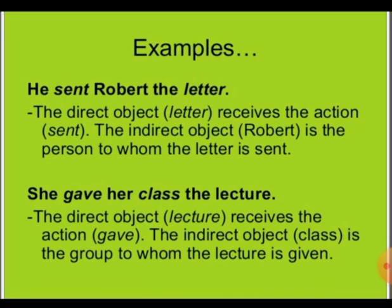'She gave her class the lecture.' The direct object 'lecture' receives the action 'gave.' The indirect object 'class' is the group to whom the lecture is given.